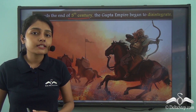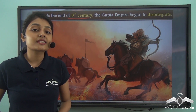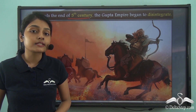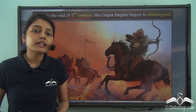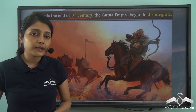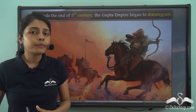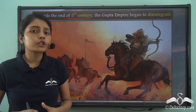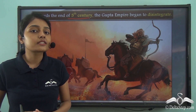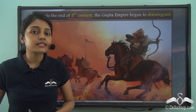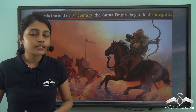In our subsequent lesson, we will now try to trace what happened after the Gupta Empire completely fell into pieces — which powers gained control over different regions in the Indian subcontinent.